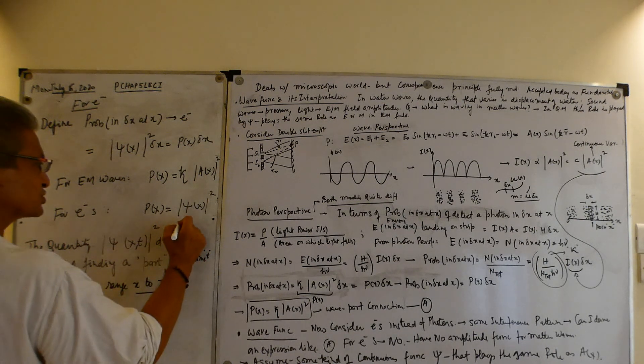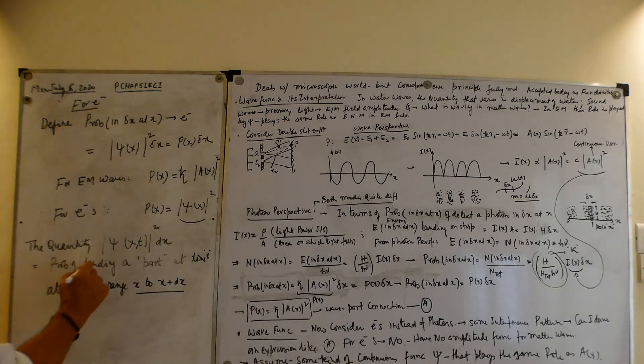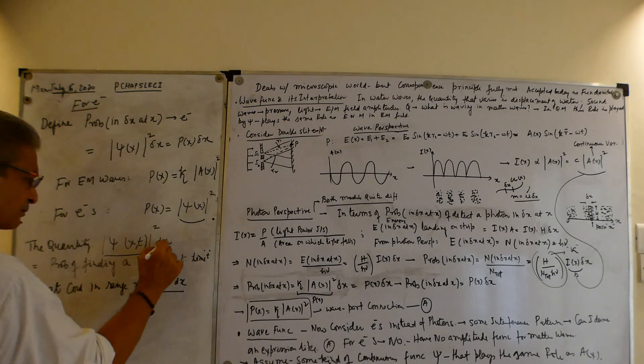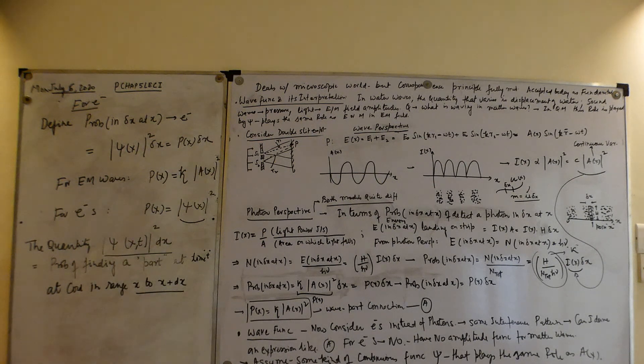So remember, this is the probability density, and this is the probability after you multiply it by dx. To get the probability, you have to multiply it by dx. This is the probability density.